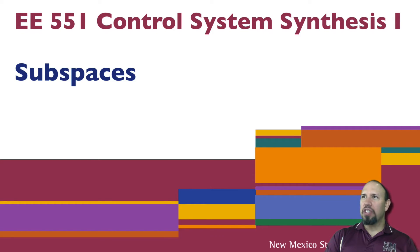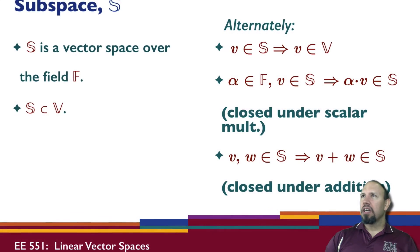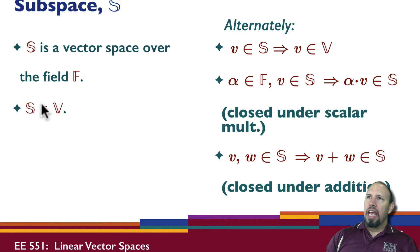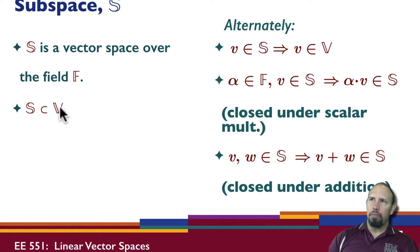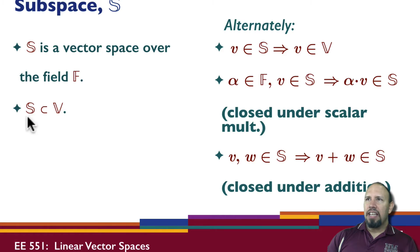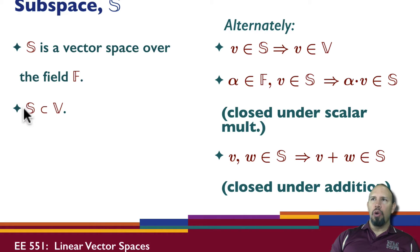Moving on, we're going to talk about subspaces. Subspaces satisfy two properties: first, the subspace S is a vector space over the field F. For a given vector space, S is a subspace if it is contained within that vector space. S could be called M or N or whatever, but that set must be contained within the vector space — so S must be a vector space on its own and contained within another vector space.